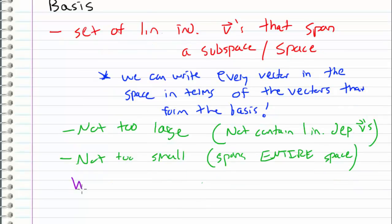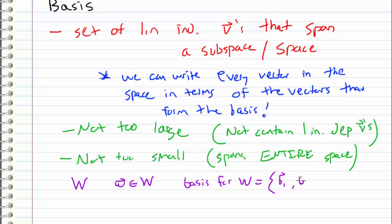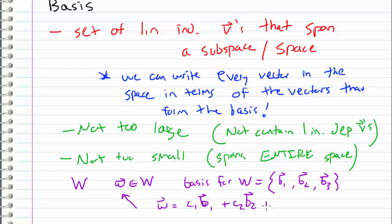Let's consider a space that we will call W. If I take any vector in W and I also have a basis for W, which is equal to the set containing b1, b2, and b3, then any vector in our subspace W can be written in terms of linear combinations of our basis.